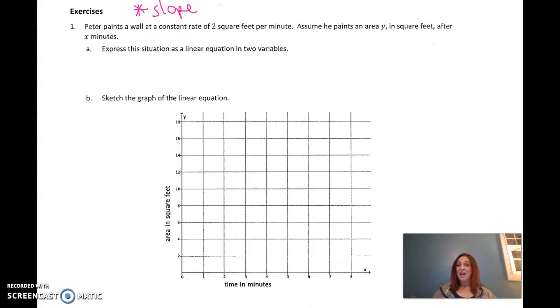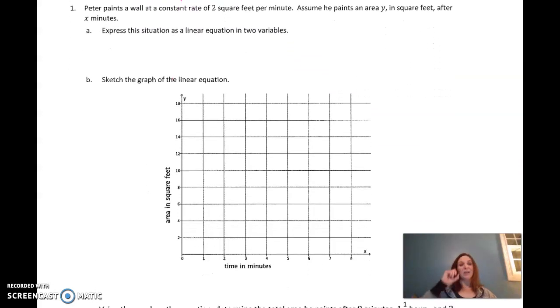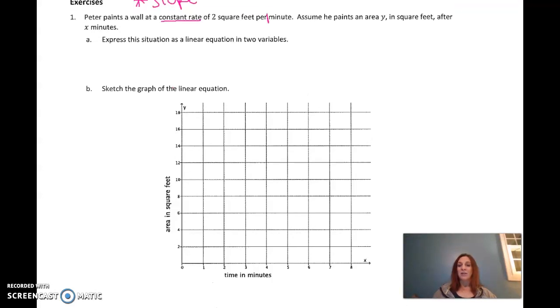So we're revisiting our work on constant rates. Peter paints a wall at a constant rate of, so that constant rate, I'm thinking it should be linear, 2 square feet per minute, 2 square feet per 1 minute. He paints an area, y square feet, after x minutes.